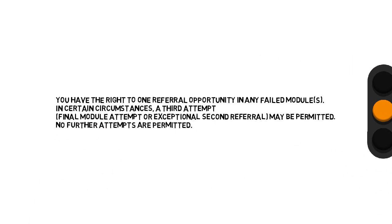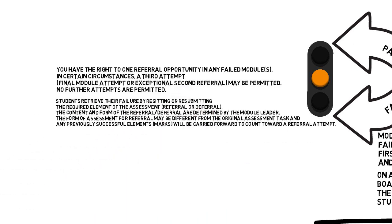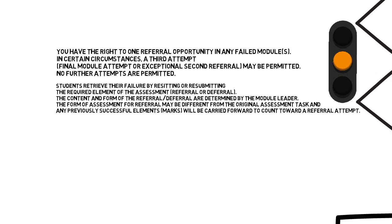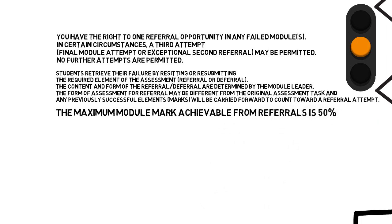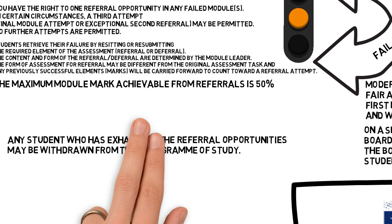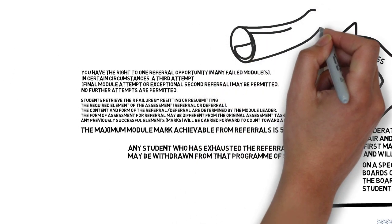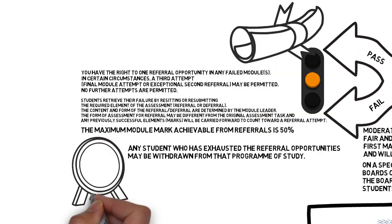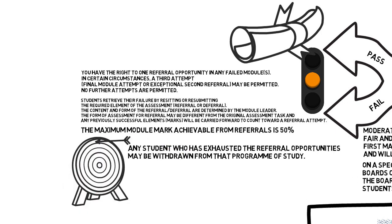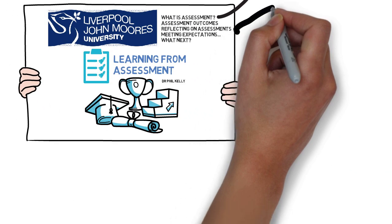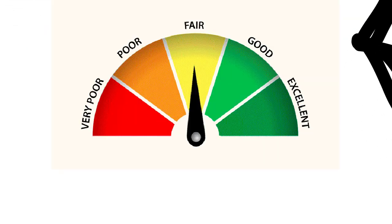If you do fail the assignment, you will have the chance to put that right and still pass the module and progress, but you must pass all your assessments to get the credit for the module. Don't forget that if you are referred in any assessment, the maximum score you can get is 50 percent. If you've already passed a particular component for a module, you won't have to take that again — only the components that you fail. Once you've made good any assessment and scored 50 or more, you'll be awarded the relevant credit. If you haven't passed, it means you haven't met the outcomes for that particular assessment.